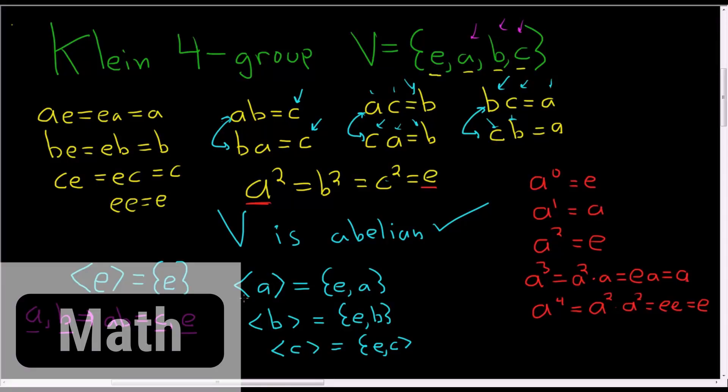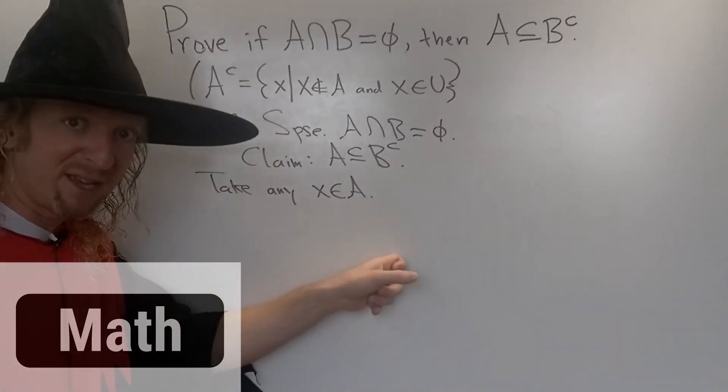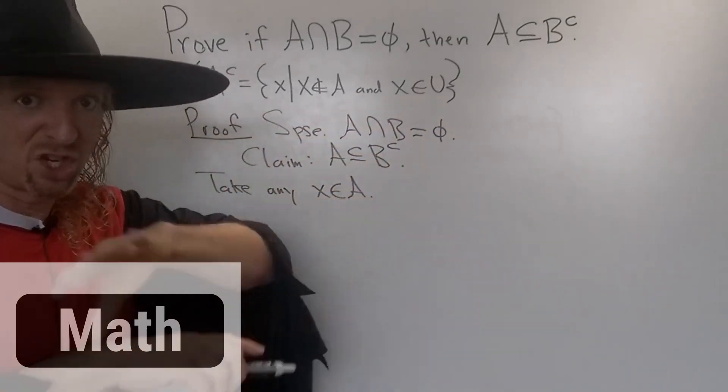So these are the only subgroups of the Klein Four. Let's draw a subgroup lattice. Because if it is in B then it's in A and B and it's in the intersection which is empty which is a contradiction.